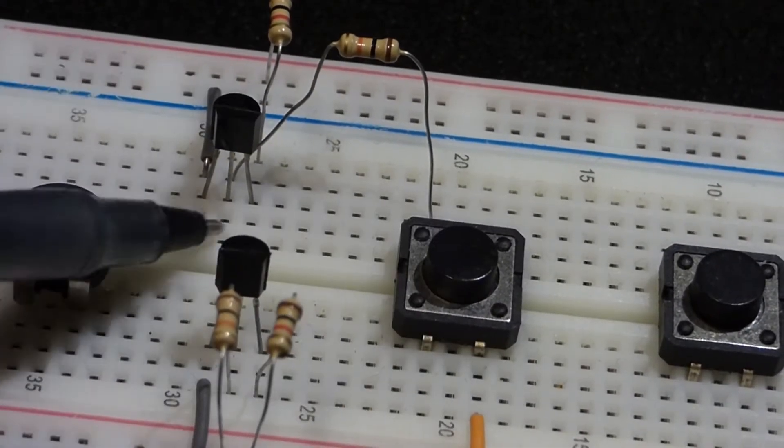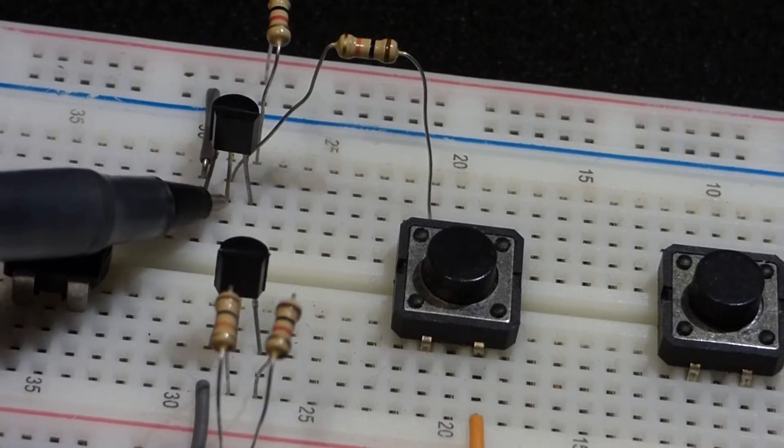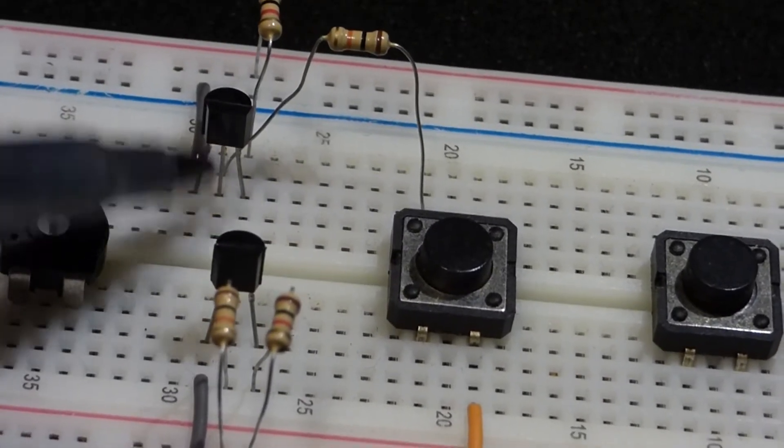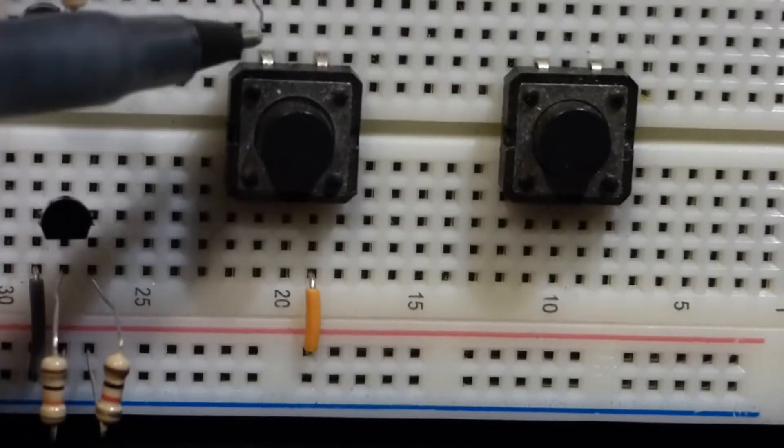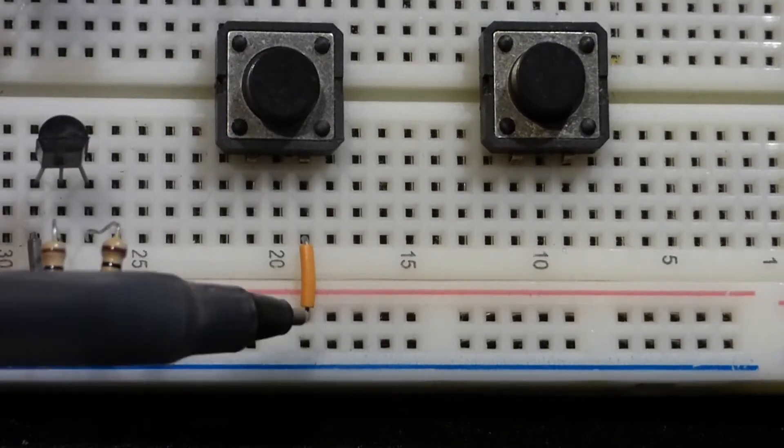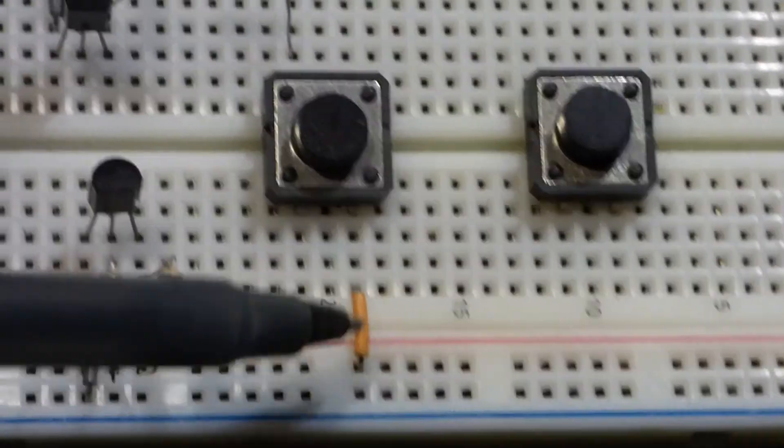Now this one's going to be controlled by the switch. So the base, the 10 kilohm resistor comes from the switch to the base of the transistor. See the base, the switch lead there. And then when I close the switch, that will connect it to the positive rail.